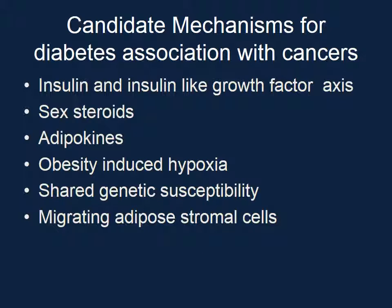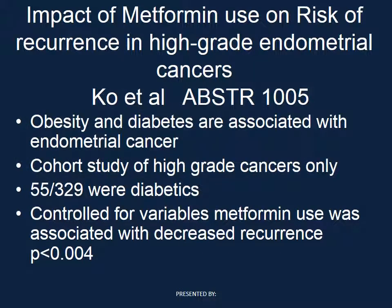Obese patients tend to have less well-oxygenated tissue, and there may be a genetic susceptibility to being obese. Something we noted was that patients who are obese and develop endometrial cancer were often on metformin, and those patients on metformin apparently lived longer and had a better prognosis than those off metformin. This has prompted a targeted trial that would prophylactically treat endometrial cancer patients with metformin, with the hope of improving survival.